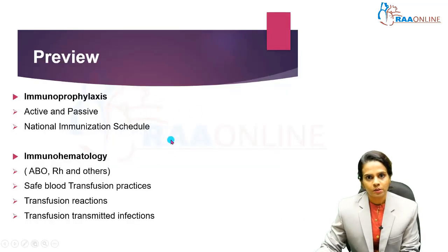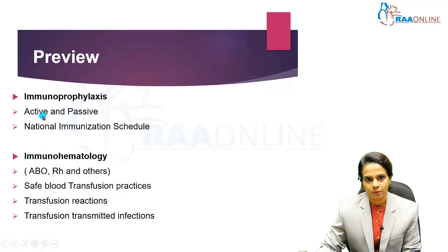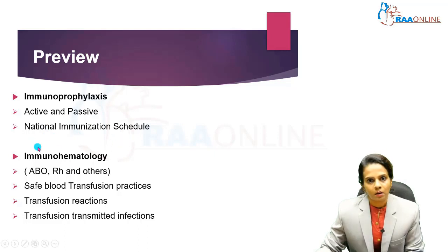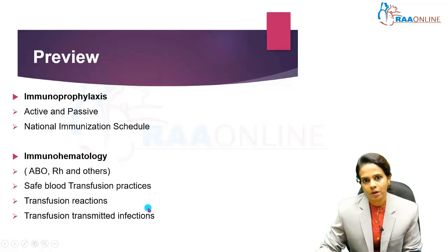Moving on to the chapter preview. First, I will cover immunoprophylaxis details followed by immunohematology. In immunoprophylaxis, we will include active immunoprophylaxis and passive immunoprophylaxis. Active immunoprophylaxis is nothing but vaccination, which contains all types of vaccines and other details. Passive immunoprophylaxis is nothing but ready-made commercially available immunoglobulins. I will also discuss the national immunization schedule. In the immunohematology part, I will cover the basics of the ABO-RH blood group system, followed by safe blood transfusion practice, transfusion reaction, and transfusion-transmitted infection. I will only cover the basics of immunohematology.